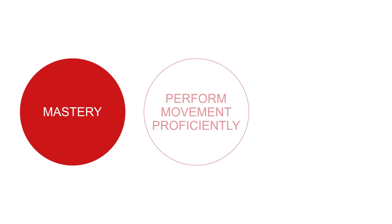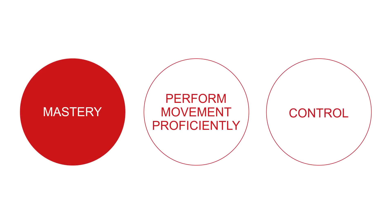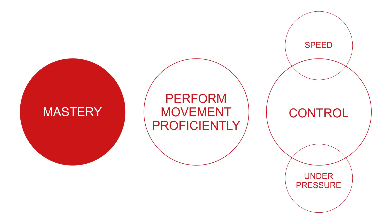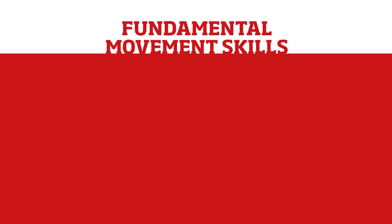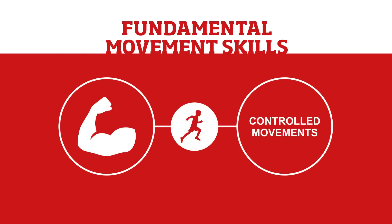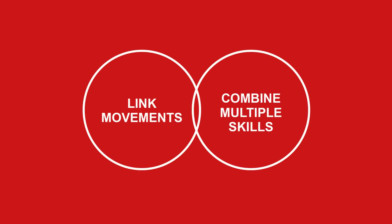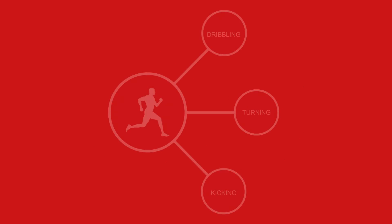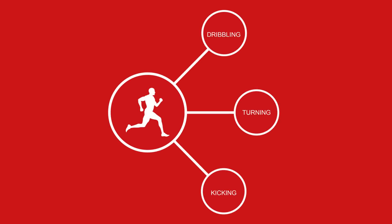Mastery means being able to perform movements proficiently and with control, even at speed or under pressure. Without it, children can struggle with the more advanced skills. When strength is developed alongside FMS it creates a foundation for all other forms of exercise and helps children demonstrate controlled movements. The starting point is to introduce and teach isolated movements that help master simple skills. Long term, you're aiming to teach children to link movements and combine multiple skills — for example, running links to dribbling, turning and kicking in young footballers, and leaping links to catching, rotation and throwing in netballers.